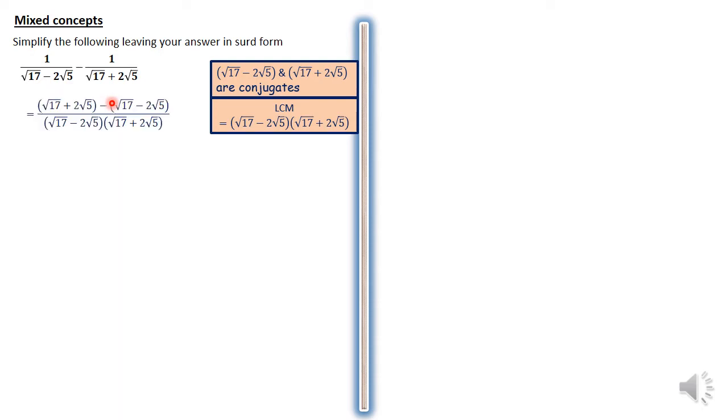Therefore, if that LCM would have root 17 plus 2 root 5 times root 17 plus 2 root 5, that is this LCM here, divided by the first denominator should give us the second denominator which we have over here. The same LCM divided by the second denominator should give us the first denominator which we have here.